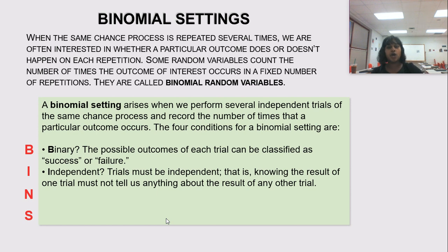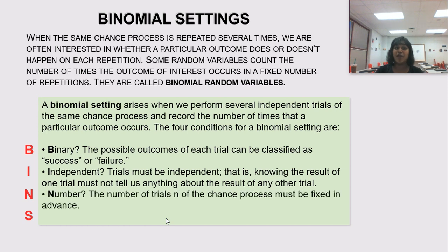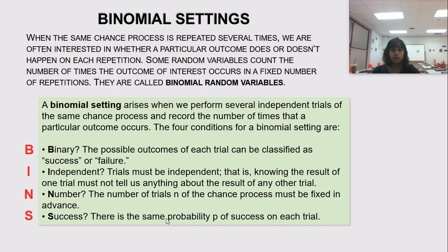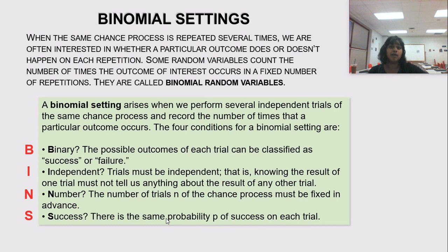I stands for independent — are the trials independent of one another? N stands for number — is the number of trials fixed in advance? You can't toss your coin five times, not get the probability you want, and then toss it five more times. You need a set number of trials from the start. Finally, S stands for success — there is the same probability of success in each trial. When I flip that coin, I have a 50-50 chance of getting heads. The probability doesn't have to be 50-50, but it must be the same in every trial.